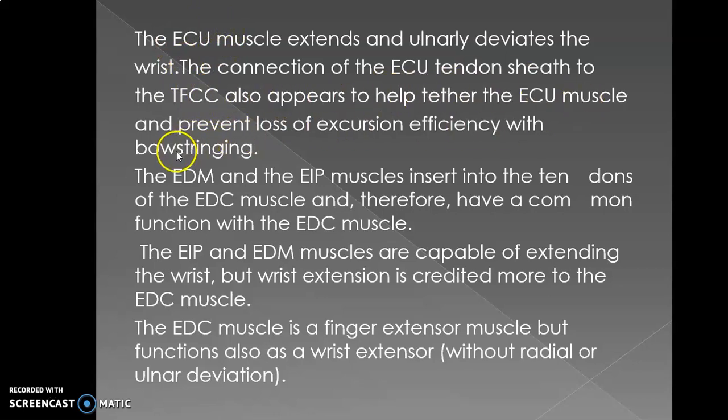The ECU muscle, along with the TFCC which you have already studied, helps in preventing the bowstringing mechanism. The extensor digitae minimae, which is the extensor muscle of the little finger, and the extensor indicis muscle insert into the tendons of the EDC — they don't have separate tendons. The extensor digitae minimae attaches to the EDC tendon of the little finger, and extensor indicis proprius attaches to the EDC tendon of the index finger.